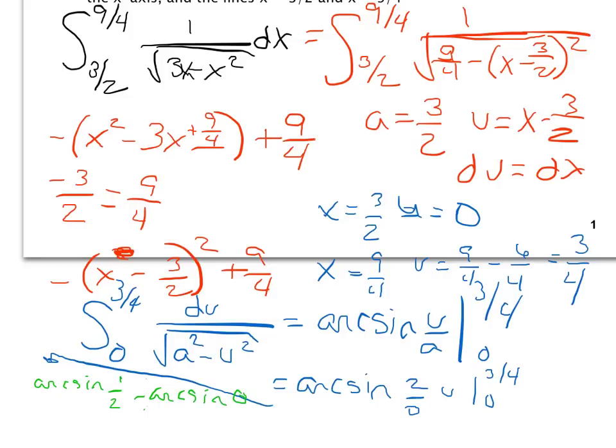Well, remember what arc sine is asking me for. It's asking me for my degrees or my rotation. So what rotation between negative pi over 2 and pi over 2 gives me a sine value of 1 half? Well, pi over 6 does. What rotation gives me a sine value of 0? Well, 0 does. So I have pi over 6 minus 0, which gives me a final answer of just pi over 6.